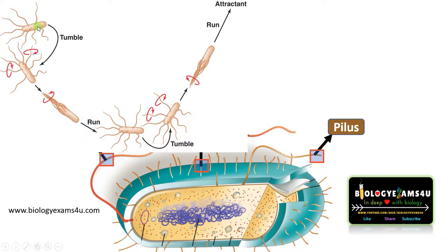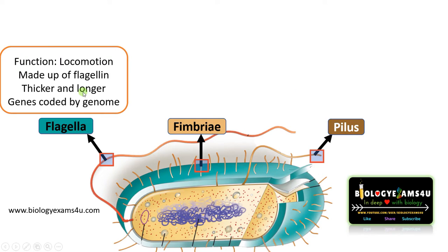As the flagella rotates, it propels the bacteria forward either by a tumbling movement or a running movement towards the attractant. Flagella is a structure meant for locomotion. It is made up of a protein called flagellin. It is thicker and longer compared to fimbriae and pilus. The genes are coded by the genome of the prokaryotic cell or bacteria.